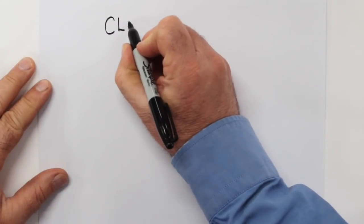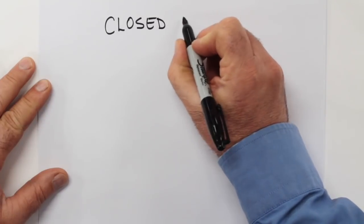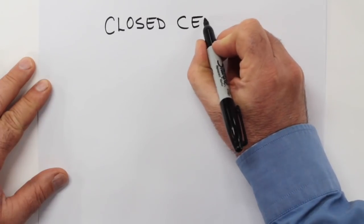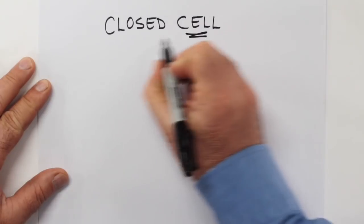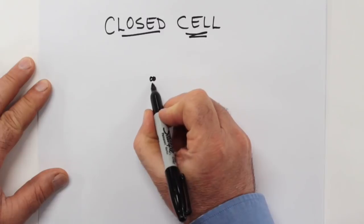All spray foam can be roughly divided into two categories. There's the closed cell type, which is the most versatile and useful in cold climates where heating is required, as opposed to open cell that I'll be discussing in a few minutes.